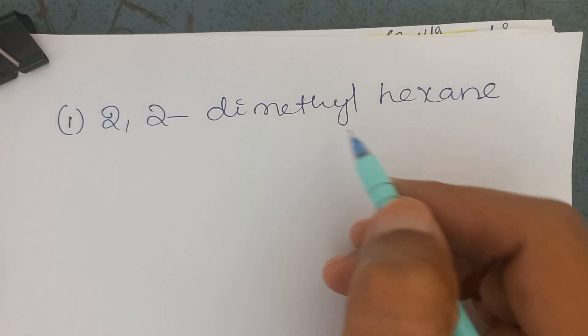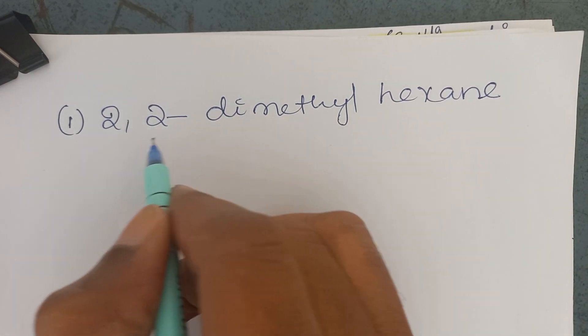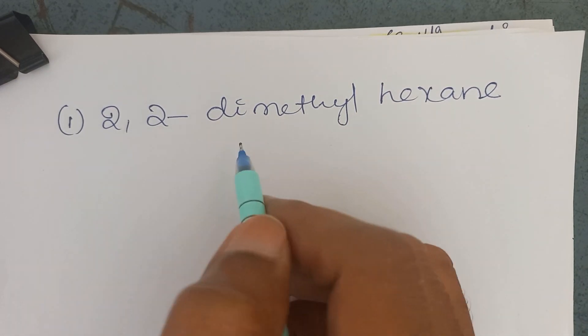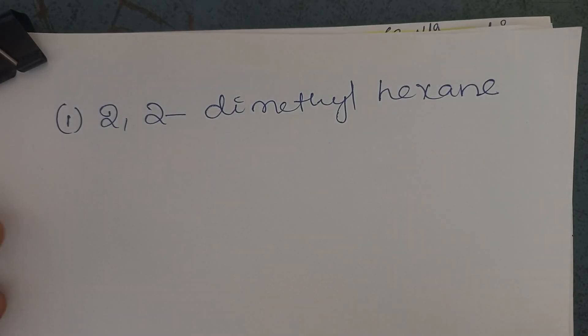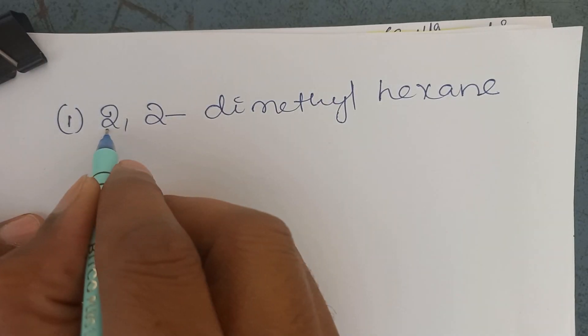So, 2,2-dimethylhexane. It is the IUPAC name. We want to write the structural formula in carbon and its compounds chapter, tenth class chemistry.